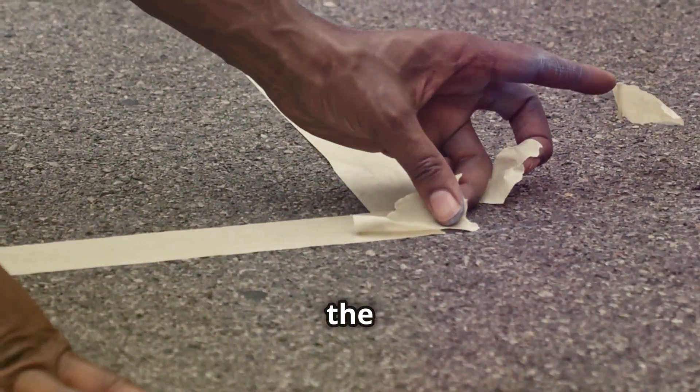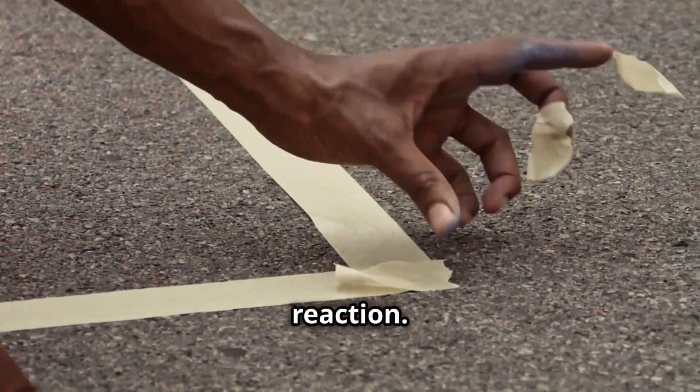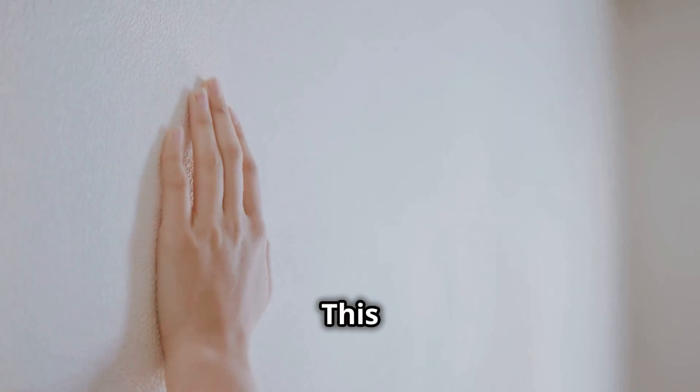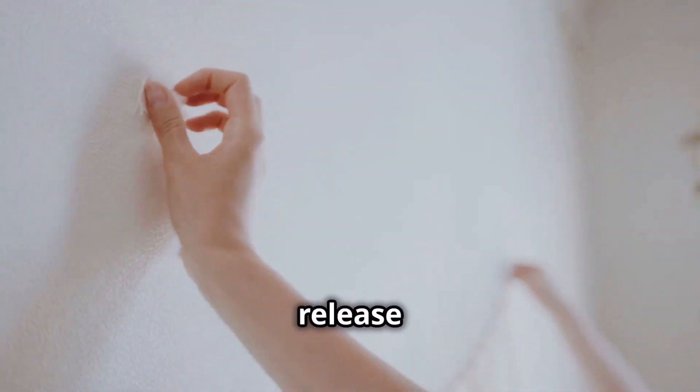But not all adhesives work the same way. Pressure-sensitive adhesives, like the kind you find on tape or stickers, don't need water or a chemical reaction. They work simply by applying pressure. The adhesive bonds to the surface without needing to dry or cure. This is why you can peel off tape and stick it again—it's designed to bond and release easily.